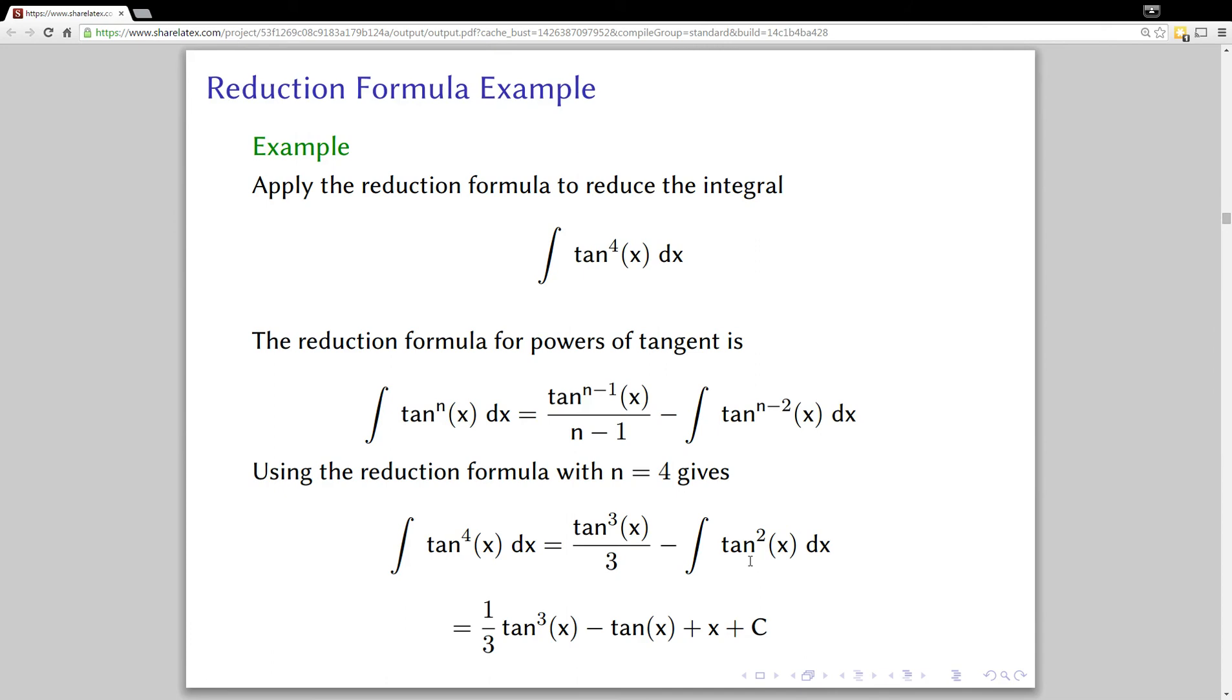We know that the integral of tan squared, that's one that we just did. It was tan x minus x, but this negative sign will change the signs there. And so that's it for tan to the fourth. That's how you would use the reduction formula to do that.